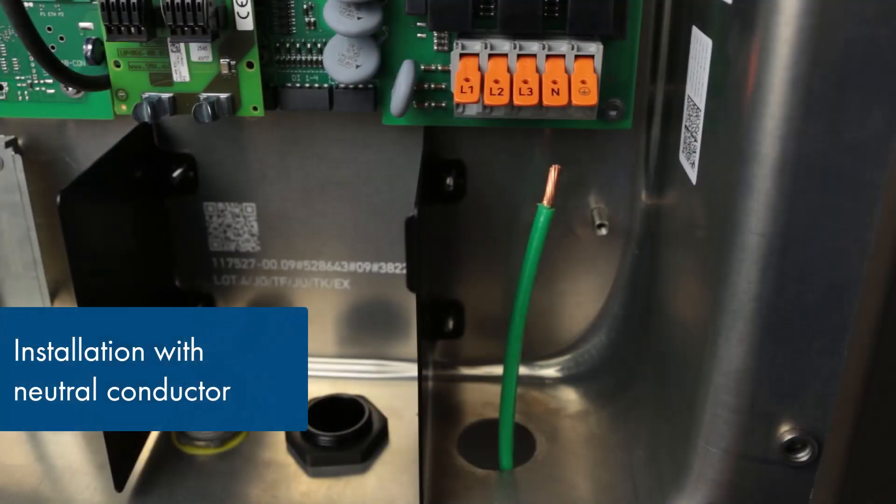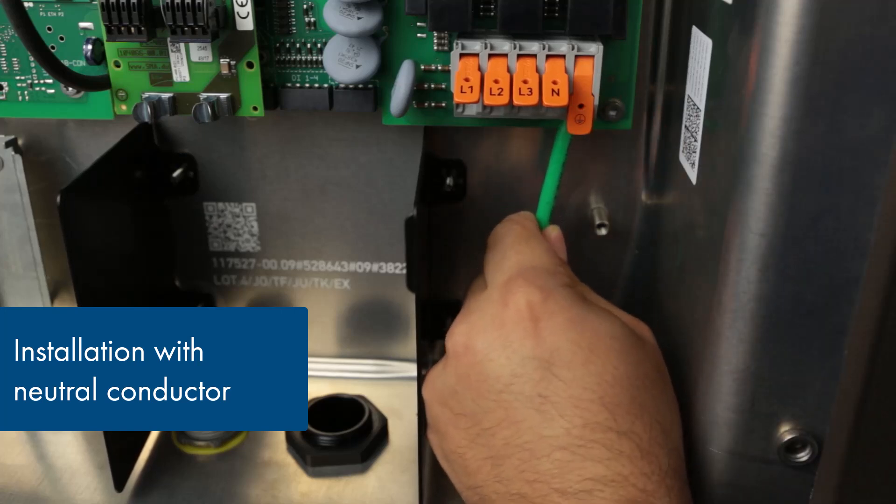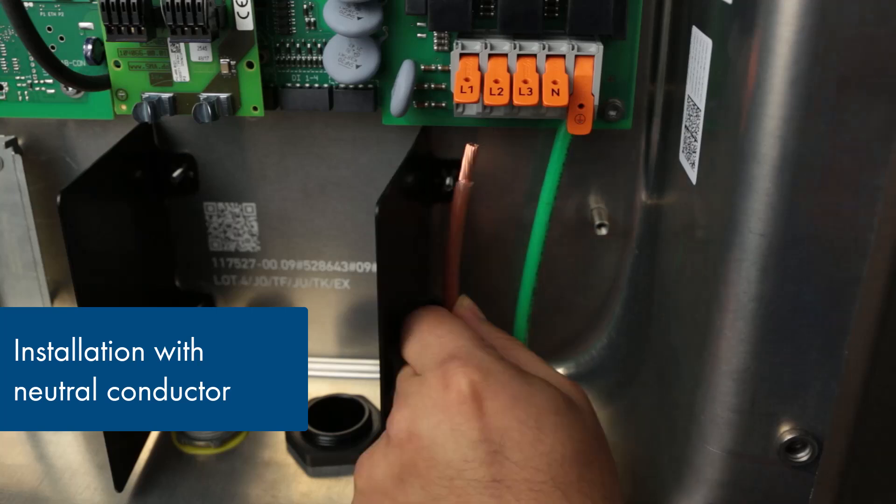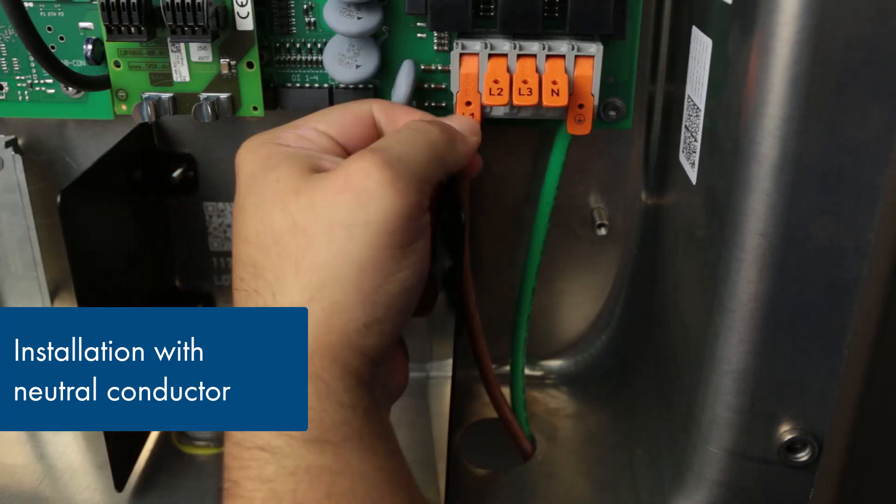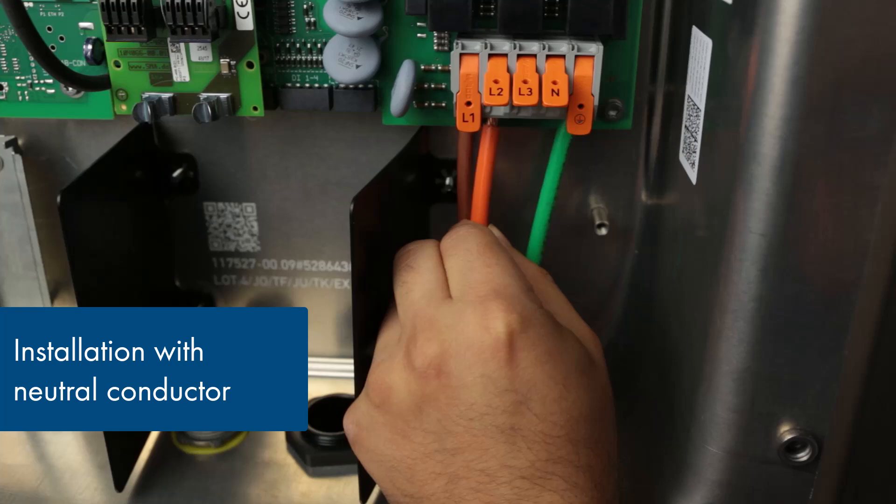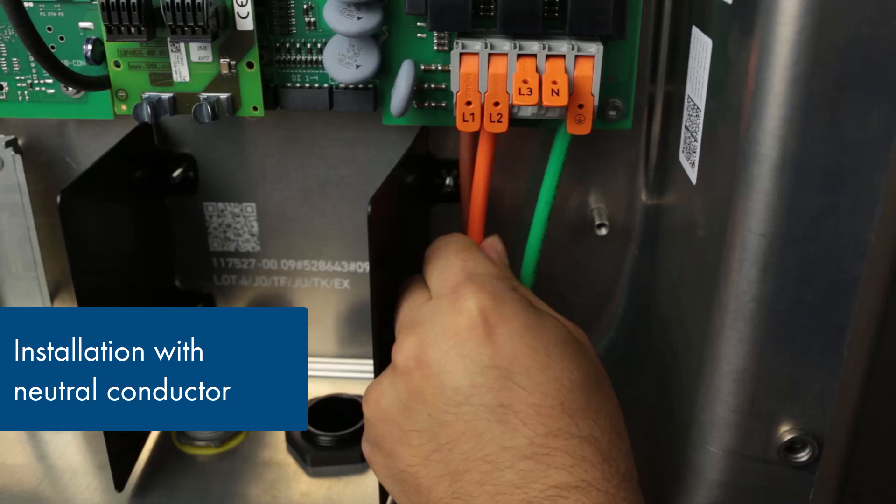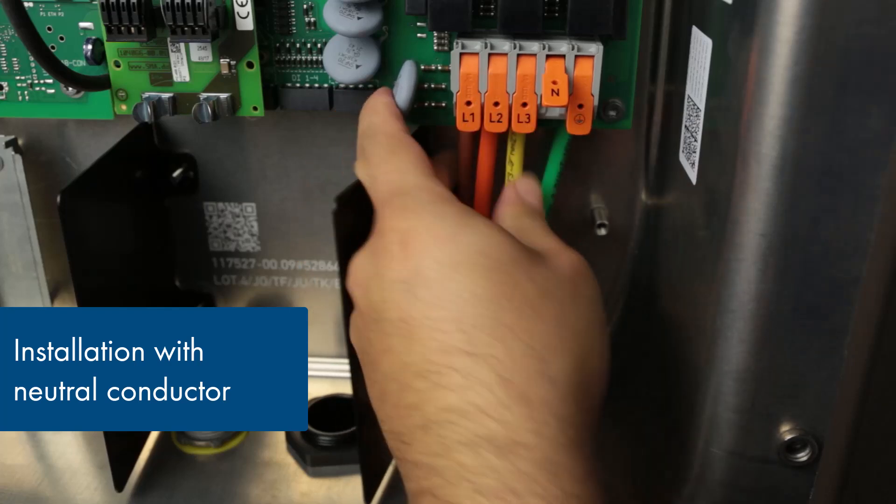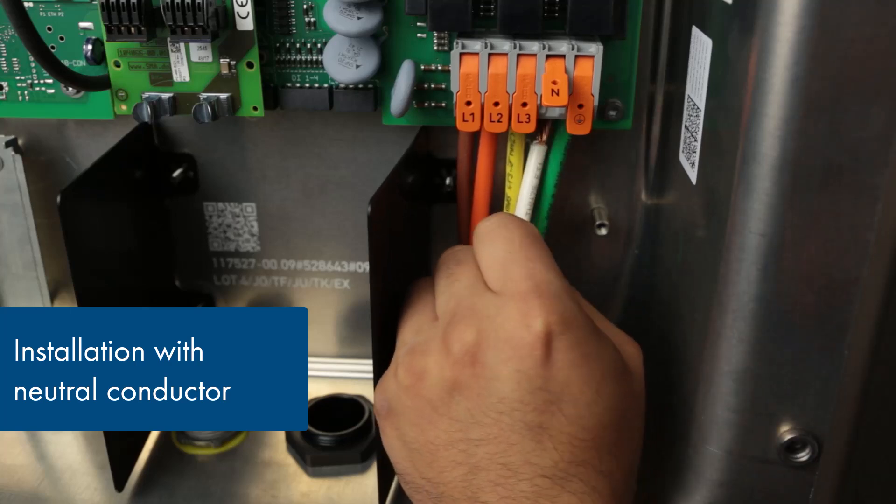To connect the AC conductors, strip back 3 fourths of an inch of the insulation of the wires AWG6 or AWG8 and insert the ground conductor into the terminal with the ground symbol and securely close the lever. Proceed to insert the L1, L2 and L3 conductors into the respective terminals, ensuring a secure seating for each. Then insert the neutral conductor into the appropriate terminal.